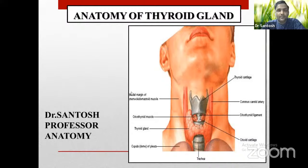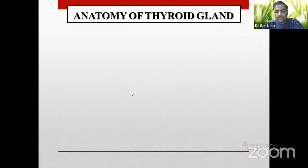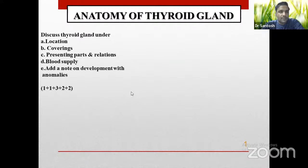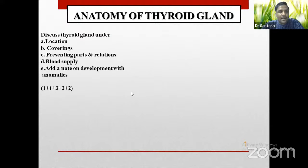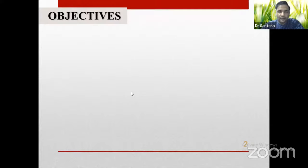Today we are going to discuss the anatomy of the thyroid gland, the most commonly and frequently asked question in university examinations. Under the CBME curriculum in RS4, structured questions are asked — for example: discuss the thyroid gland under the following headings: location, coverings, presenting parts and relations, blood supply, and add a note on development with anomalies. Nowadays the curriculum integrates clinical anatomy, embryology, and histology together.